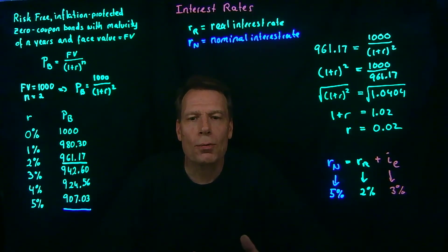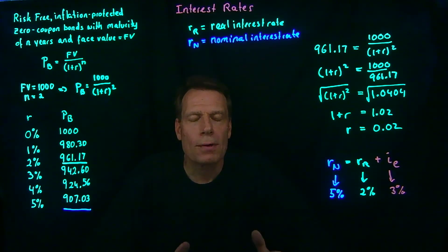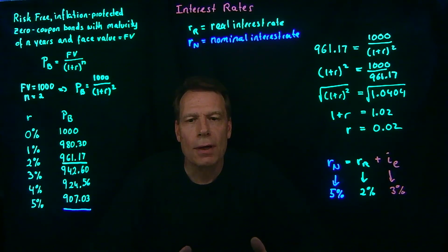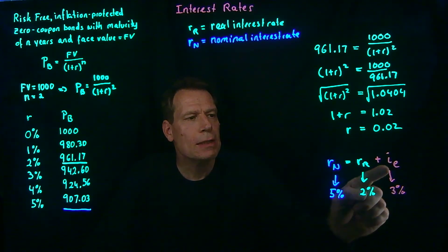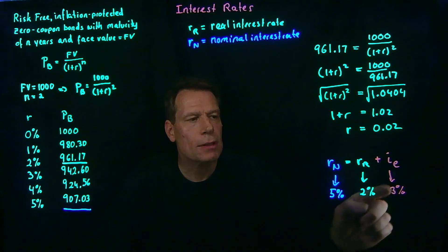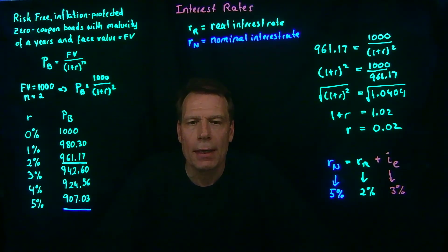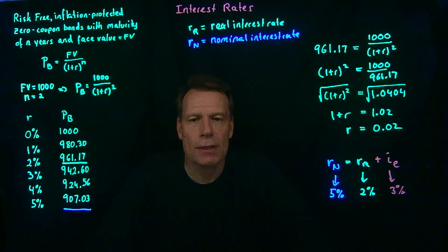These are not the only two interest rates in the economy — they are relevant for risk-free investments, one inflation-protected and one not. Of course, there are also risky investments. Corporations issue bonds that may have some default risk, so those bonds sell at lower prices, implying higher interest rates. In addition to compensation for expected inflation, investors must also be compensated for default risk, adding another term. Because different market participants have different levels of default risk, we get many different interest rates depending on that default risk premium.